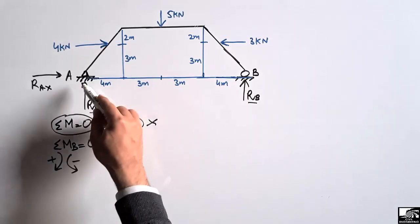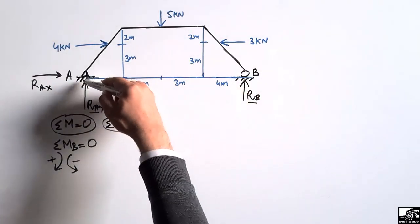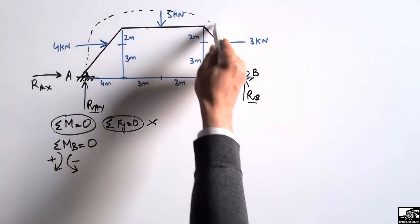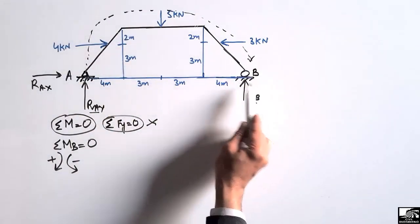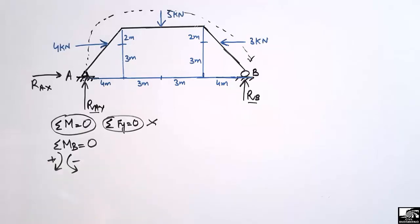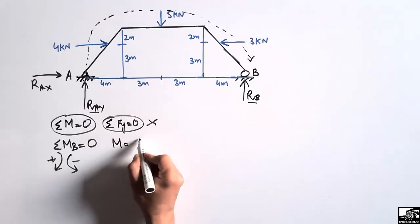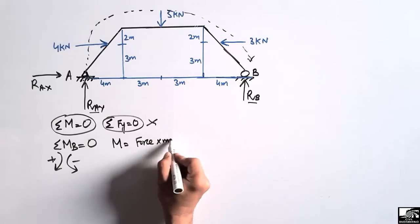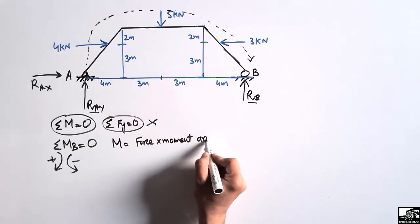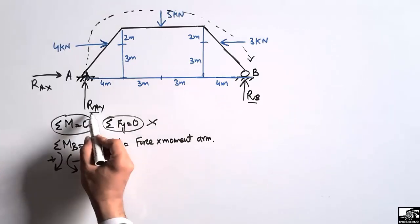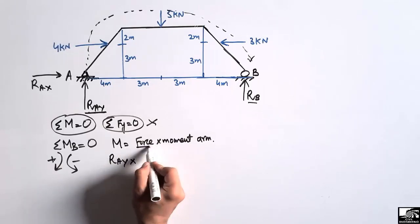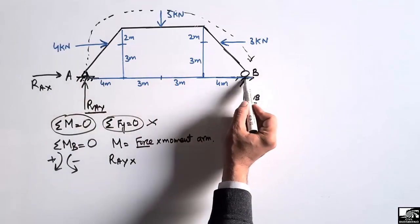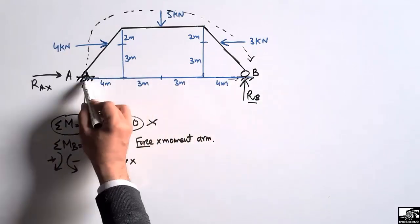R_AY is acting upward at support A. It will create a clockwise moment about point B, so it is taken as positive. The moment formula is force multiplied by the moment arm. The moment arm is the total horizontal distance from point A to point B, which is the perpendicular distance for this vertical load.